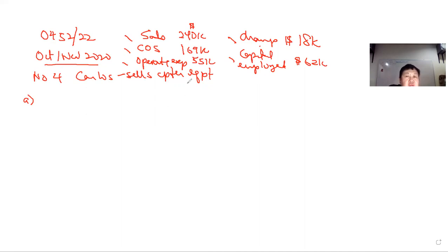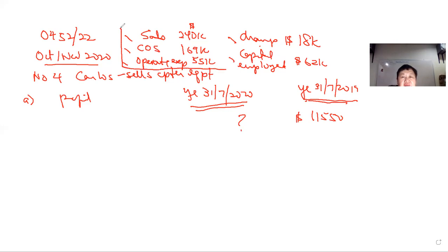Now this is part A. They ask you to find profit for year ended 31st of July 2020. Given that year ended 31st of July 2019, the figure is $11,550. This previous year's figure was just given to us because later on in this question, they asked you to compare the performance of both years. So now, you are supposed to calculate for the current year, which is 31st of July 2020, based on all this information given above. Very important, they ask you to show us workings.